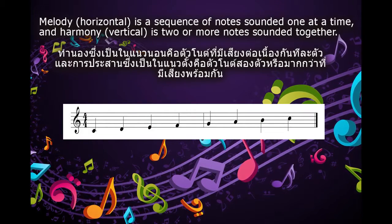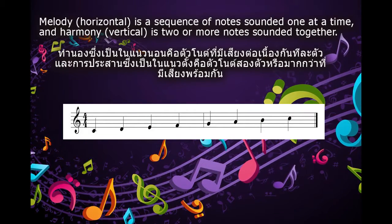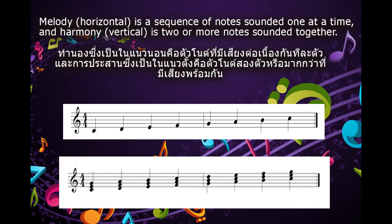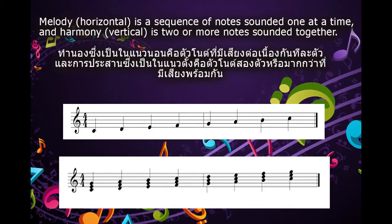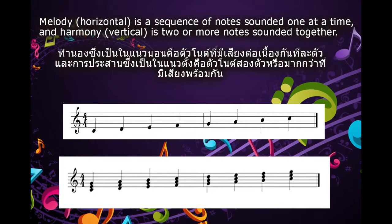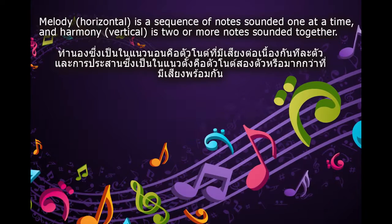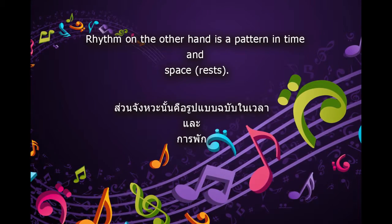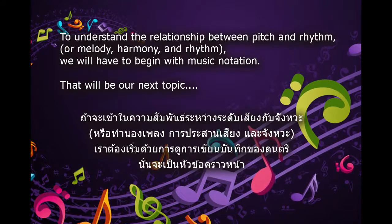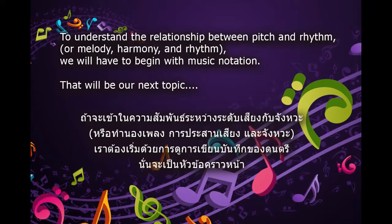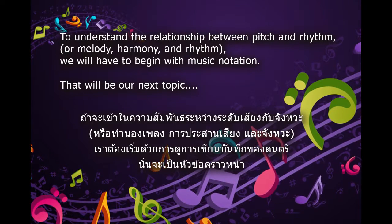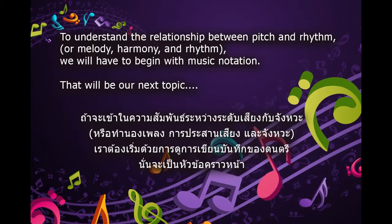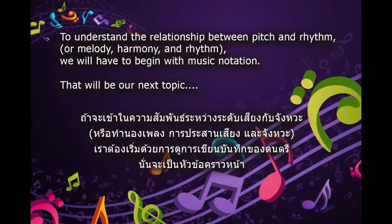Melody, horizontal, is a sequence of notes sounded one at a time. And harmony, vertical, is two or more notes sounded together. Rhythm, on the other hand, is a pattern in time and space. To understand the relationship between pitch and rhythm, or melody, harmony and rhythm, we will have to begin with music notation, which will be our next topic.